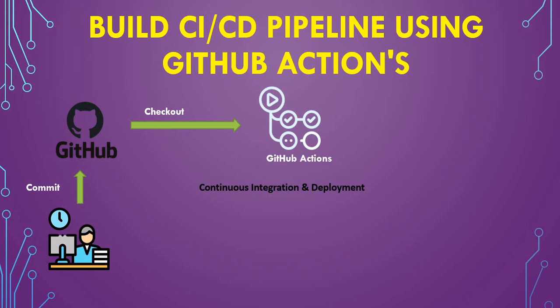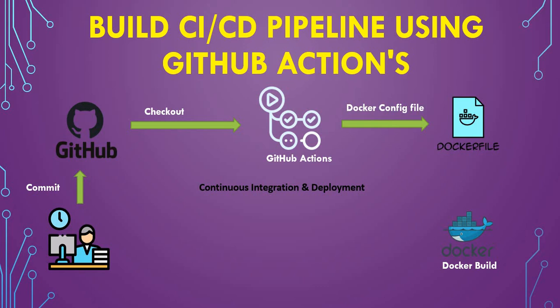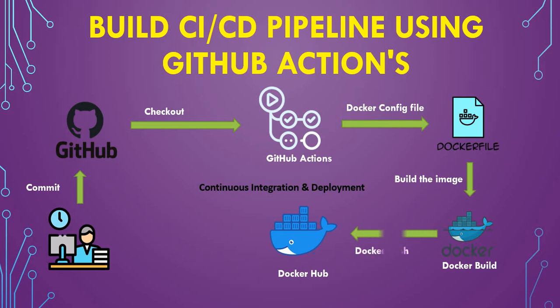What we will do is check out the GitHub repository, and we will have a Dockerfile in our GitHub. We'll see how to create a Dockerfile, which will be used in your GitHub Action as a configuration file. We will build your Docker image using the Dockerfile, because the Dockerfile defines the configuration and steps for building the image. Once the Docker build is completed, we will push that Docker image to Docker Hub.